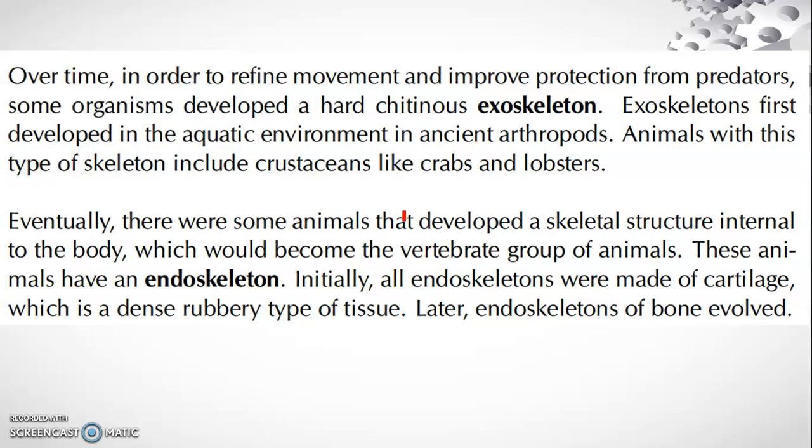Over time, in order to refine movement and improve protection from predators — and predators are things that devour other animals, as we discussed last week. They sometimes eat vegetables or grass as well. For example, lions would eat certain types of grass near them simply to aid their digestive tract — sometimes bones get stuck because they are carnivorous, so they eat some grass or leaves to aid digestion and move food further down the tract.